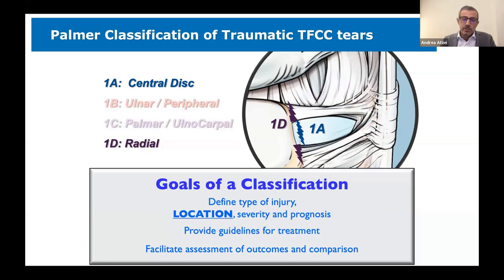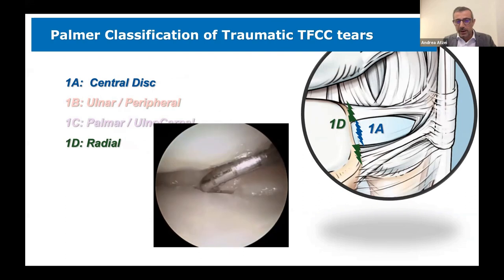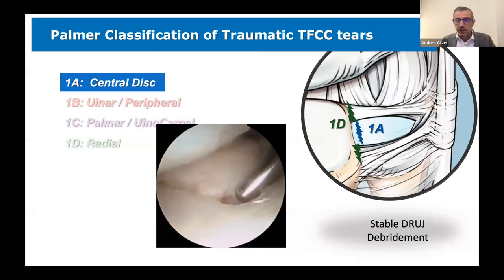It is very useful to know that on the radial side of the TFCC there are two different types of injuries: the 1A, which involves the central disc, and the 1D, which is the radial tear of the TFCC. It is very important to recognize the involvement of the 1A central disc from the attachment of the radial ligament on the edges of the sigmoid notch, like the 1D.